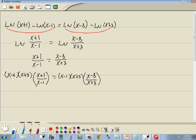Now over here the x minus 1 is going to cancel, and over here the x plus 3 is going to cancel. So let's see what we have left. We have x plus 3 times x plus 1 equals x minus 1 times x minus 8.